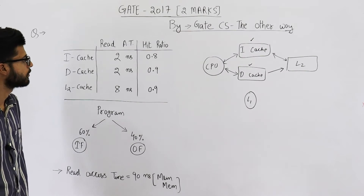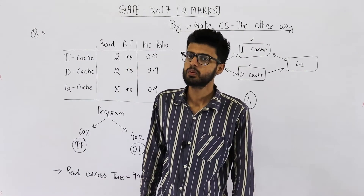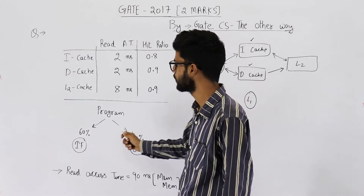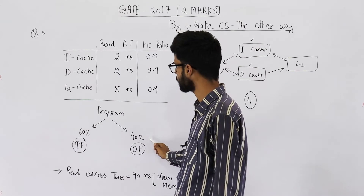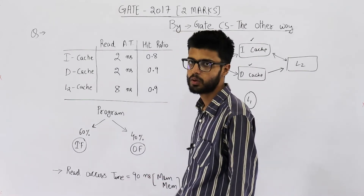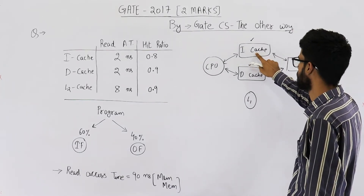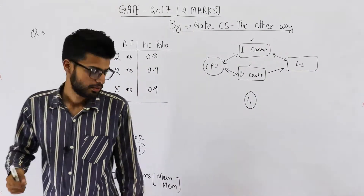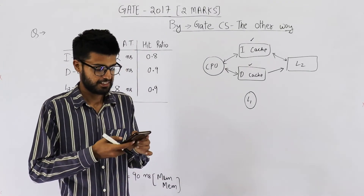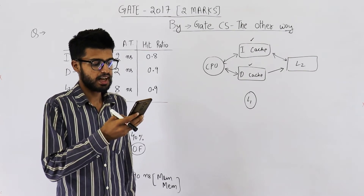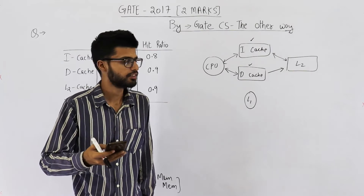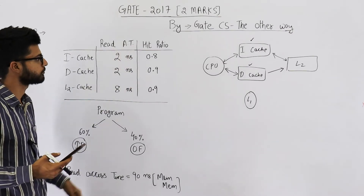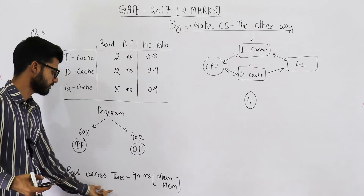They are saying: in executing a program, 60% of the reads are for fetching instructions and the remaining 40% of the reads are for fetching operands. That means 60% of the reads will be from I-cache and 40% from D-cache. They are only talking about reads, and we are required to find the average read access time. The access times given are for reads, and for main memory the read access time is 90 nanoseconds.